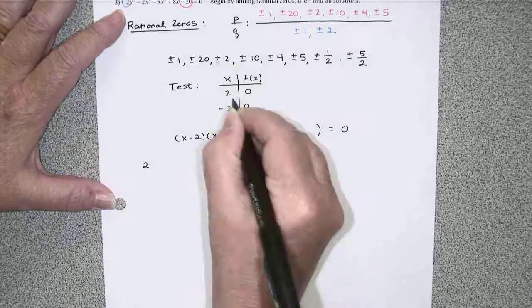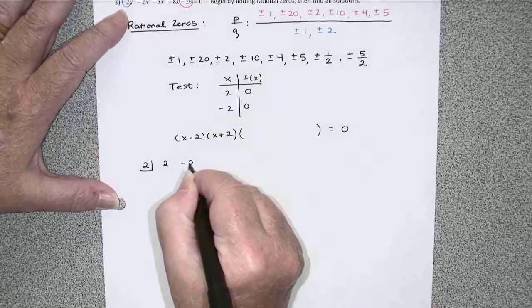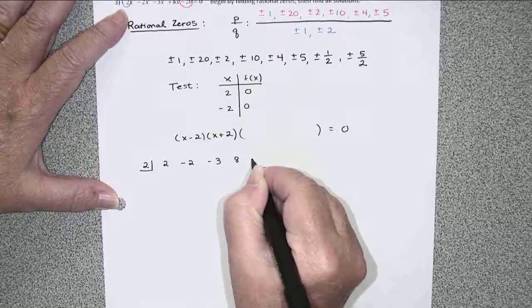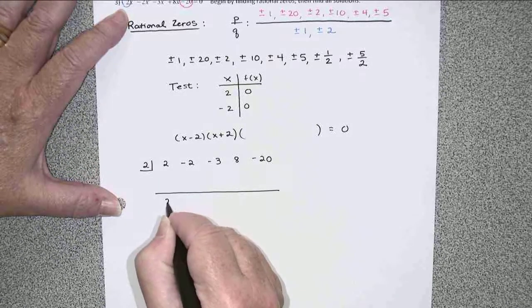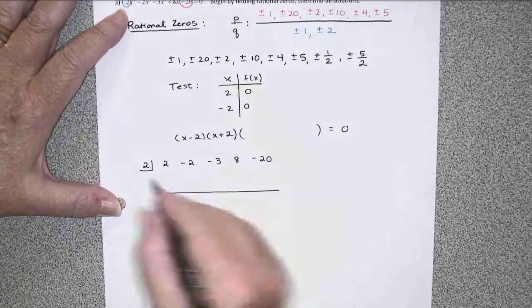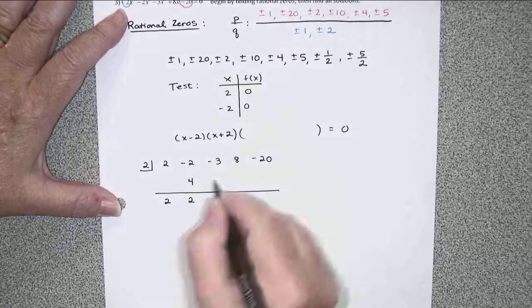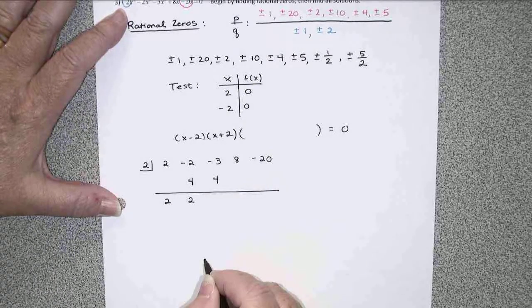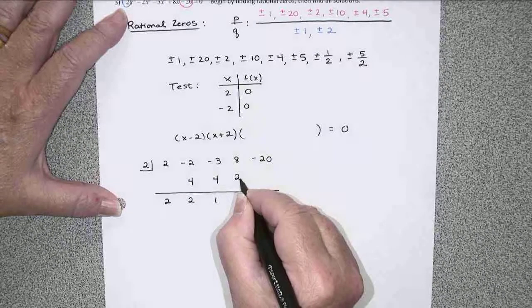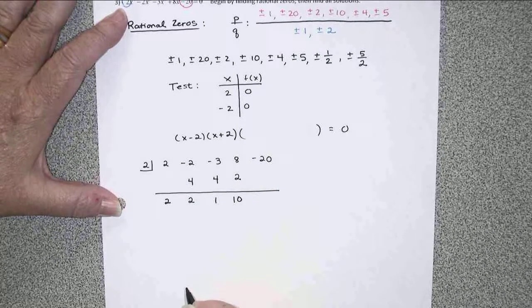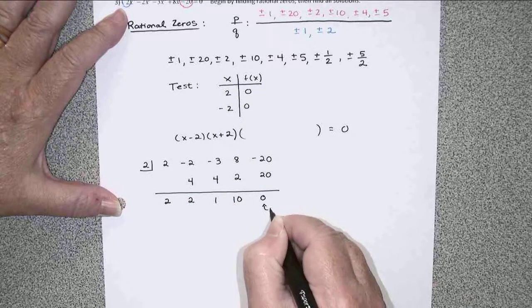I'll start with the 2. And I'm just going to copy down all of my coefficients. And here we go. Bring down the 2, multiply to 4. Adds up to 2, multiplies to 4. Adds up to 1, multiplies to 2. Adds up to 10, multiplies to 20, and there's that remainder of 0 that I expected.